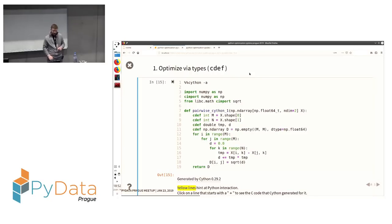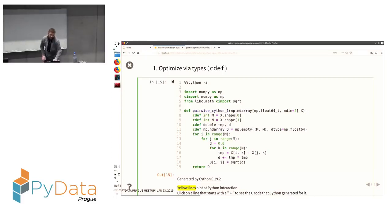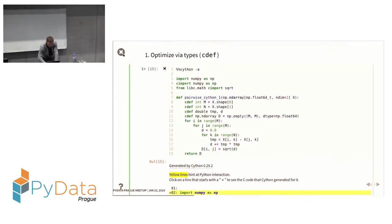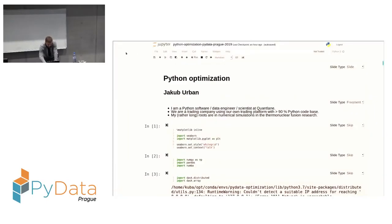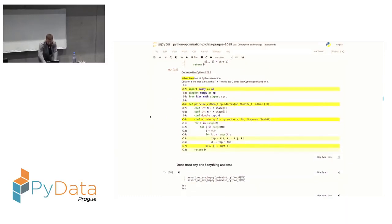To improve, we can statically type the variables used in the function using `cdef` declarations. In particular, I also put `numpy.ndarray` on the interface, so this function now works only for NumPy two-dimensional arrays. With static typing applied, you can see there's much less yellow compared to before — and in Cython, less yellow is good.